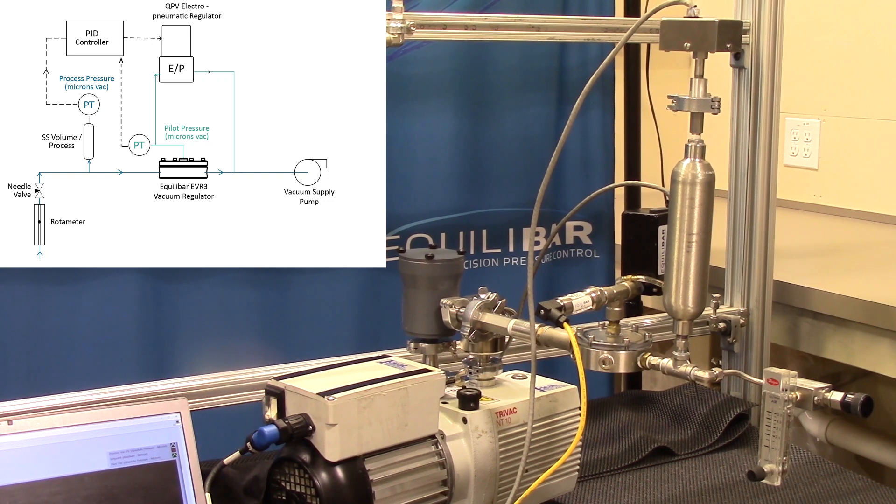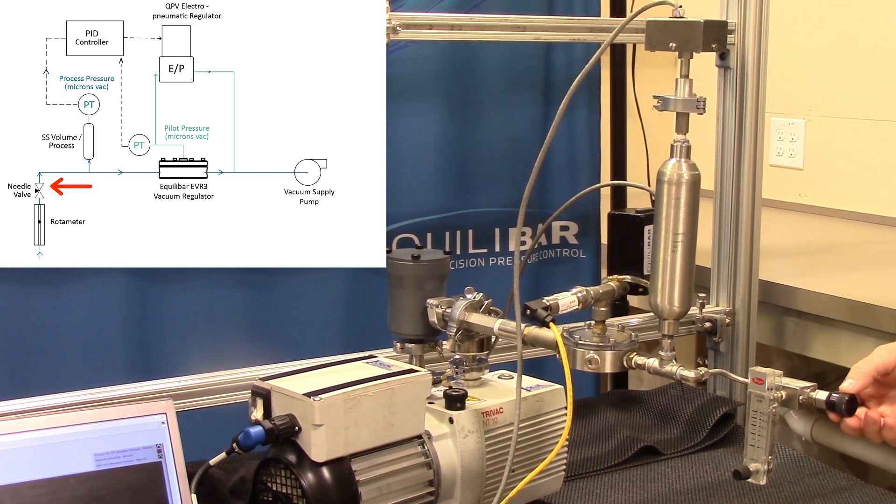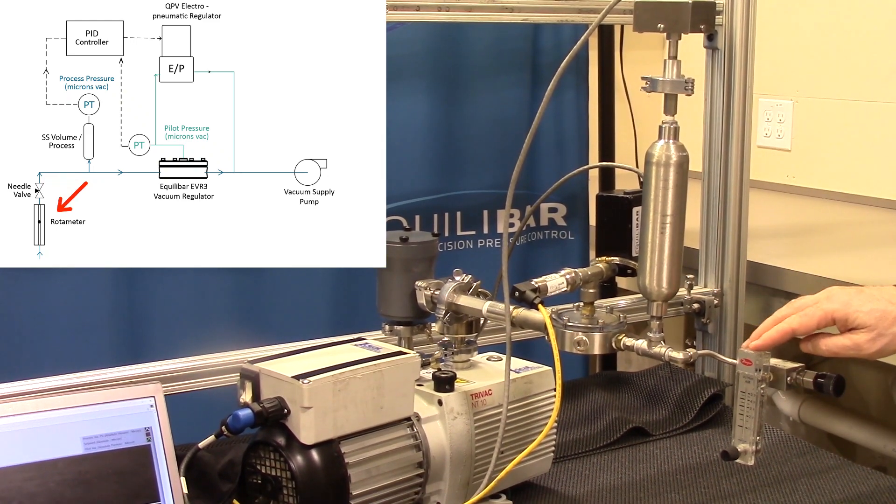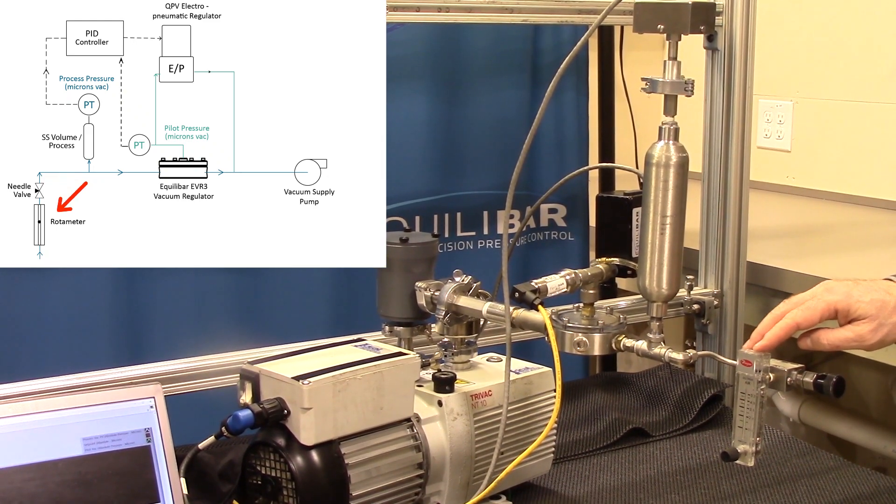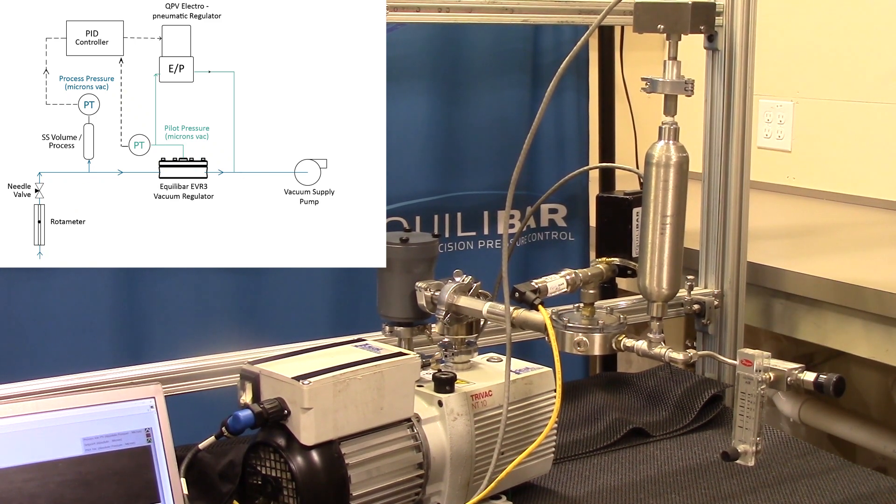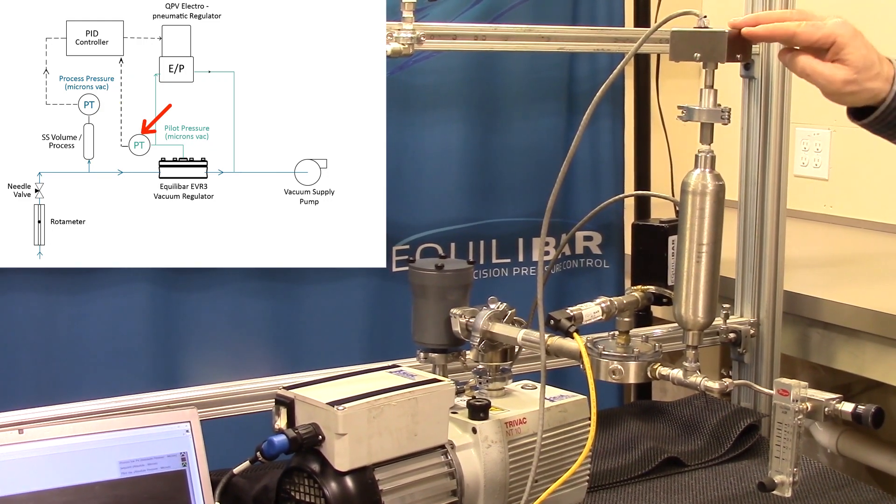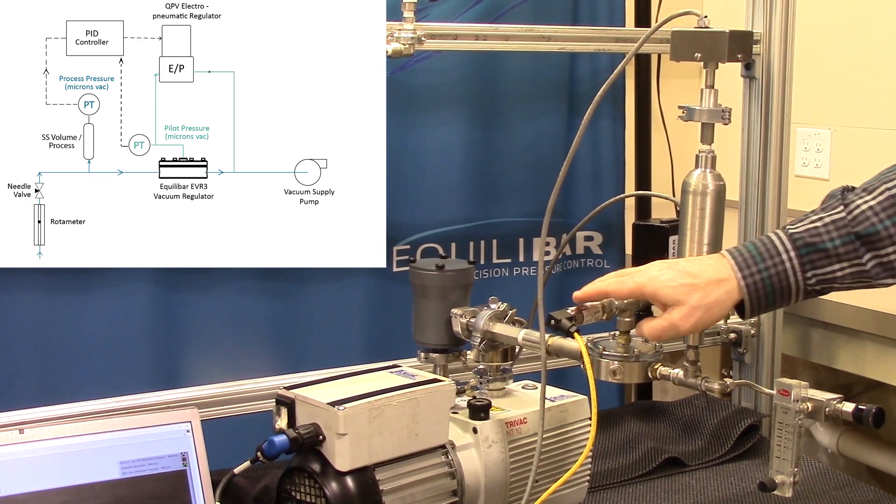The customer's process is simulated by this stainless steel volume. A needle valve with a small rotometer allows us to vary the mass flow going into the process. This rotometer is ranged 0 to 50 standard milliliters per minute. Both the process and pilot pressures are monitored by absolute pressure sensors reading in micron.